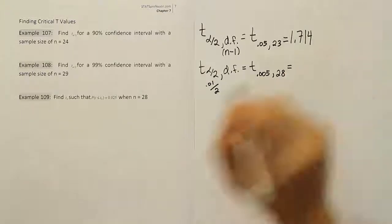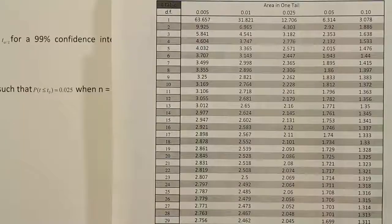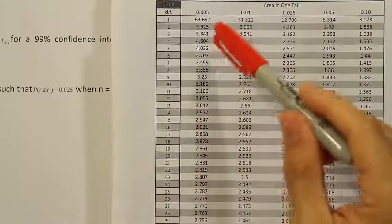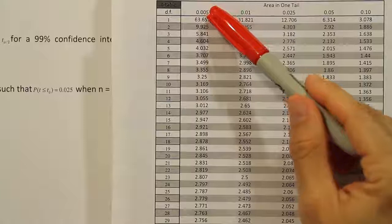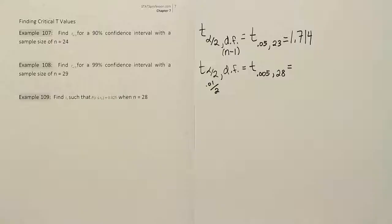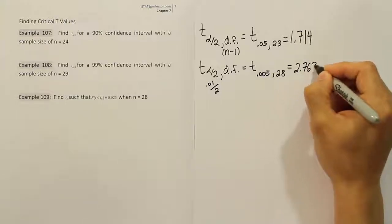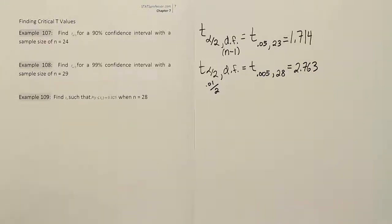Let's go to the t-table and look that value up. We're looking up 0.005 with 28 degrees of freedom, and we find the answer to be 2.763. That's in the 0.005 column at the 28 degrees of freedom row — 2.763.